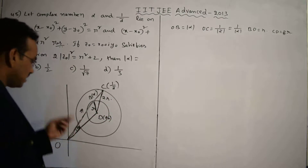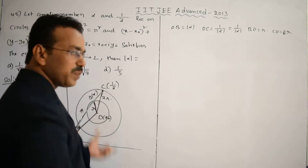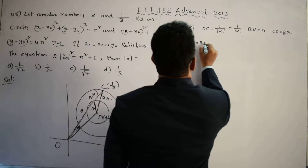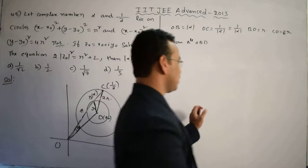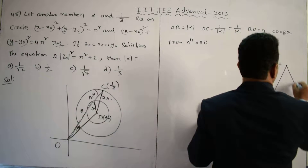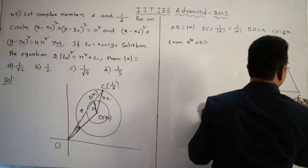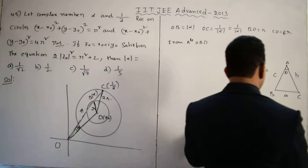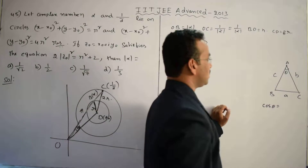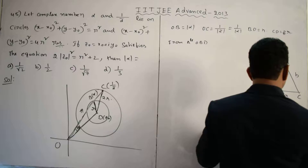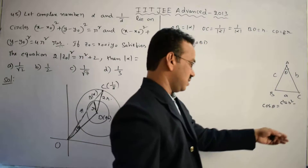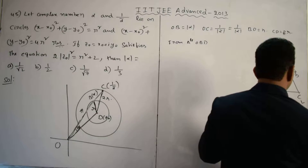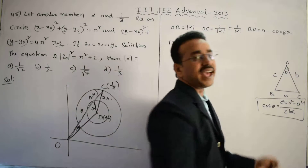From these two triangles, θ is the same. First let's take triangle OBD. There is a cosine rule to apply. In any triangle with vertices A, B, C and sides a, b, c, the formula for cos θ is: cos θ = (c² + b² - a²) / (2bc), where a is the opposite side and b, c are the adjacent sides.